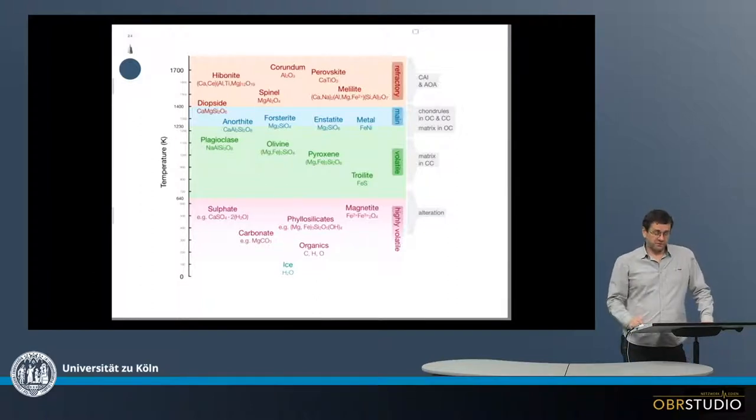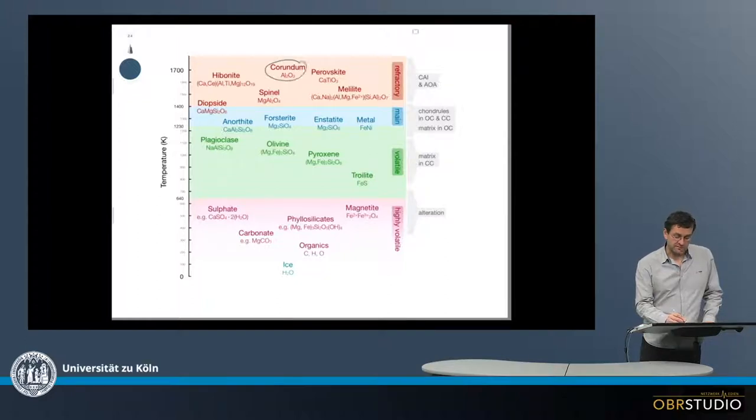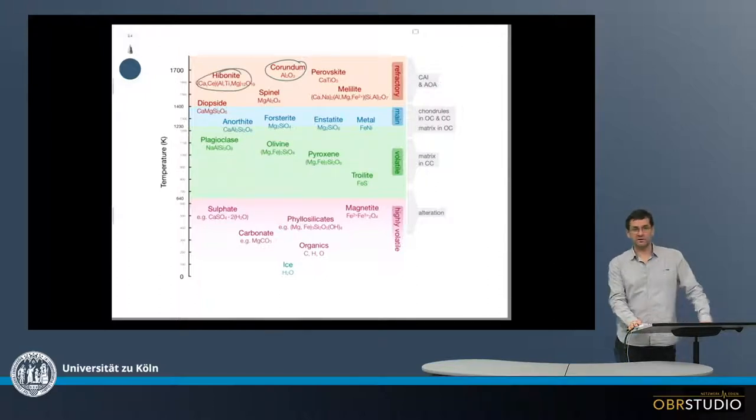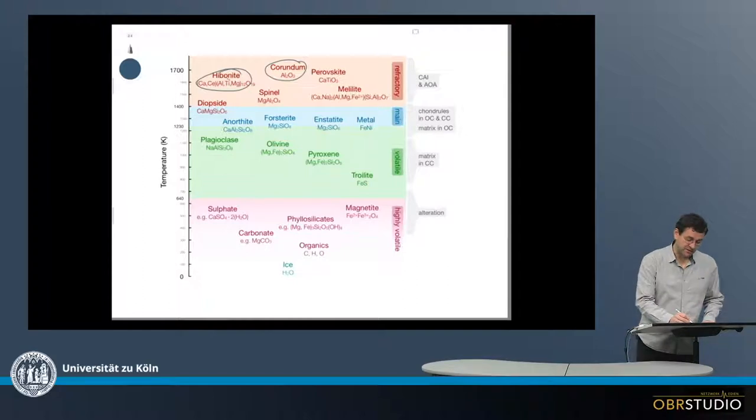At very high temperatures, we start with corundum, which has aluminum—a refractory element—together with calcium. Calcium is also found in hebonite, together with aluminum and titanium, another highly refractory element. There's also perovskite with calcium and titanium, and spinel.